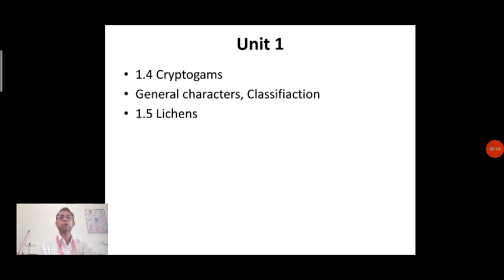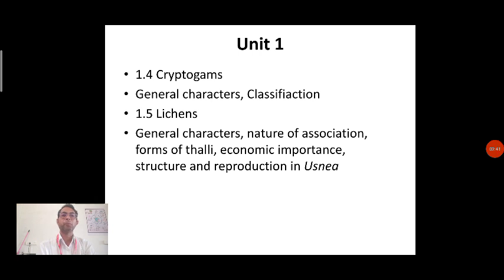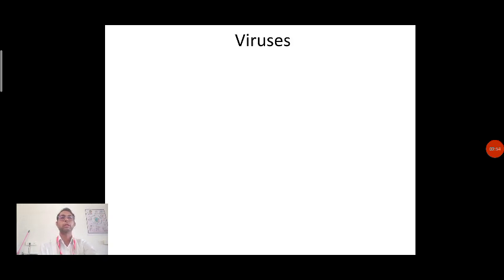The next point included is lichen. For lichen, we are going to concentrate on the general characters, nature and association, forms of thalli, economic importance, structure, and reproduction in Usnea. Usnea is one example we are going to consider for lichen. In today's lecture, we are going to talk about viruses.